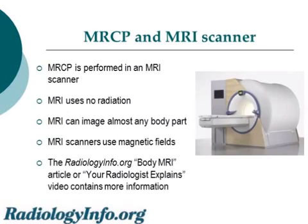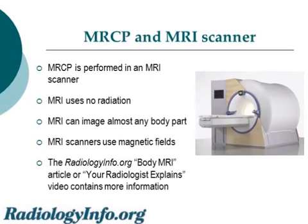An MRCP exam is performed in an MRI scanner. MRI uses no radiation and can take images of any body part. MRI scanners use magnetic fields and radio waves to make images of your body. For more details on which patients can or cannot have an MRI scan, what is involved, and how you need to prepare for it, please review the content on body MRI on this website, or watch a short video which explains all about body MRI.